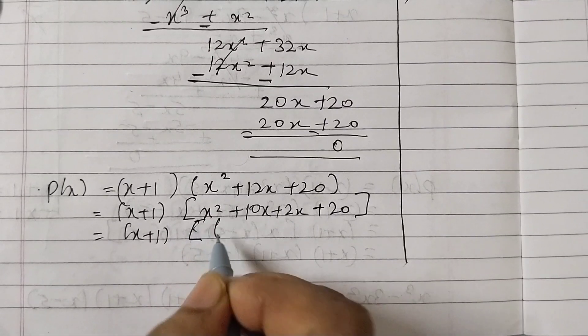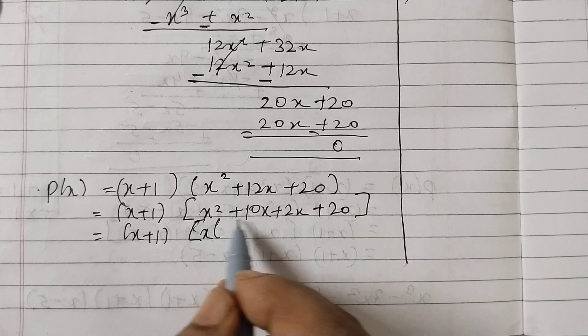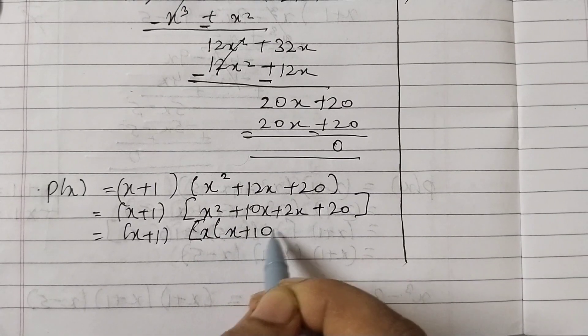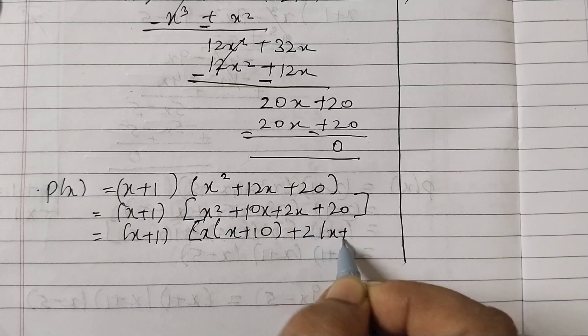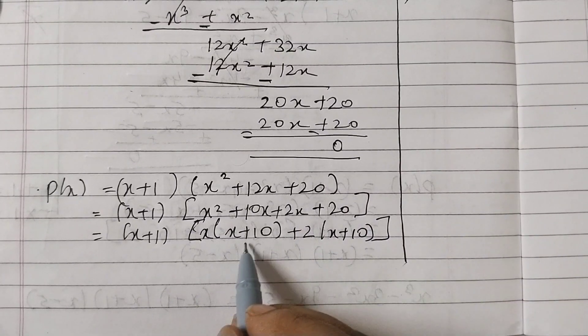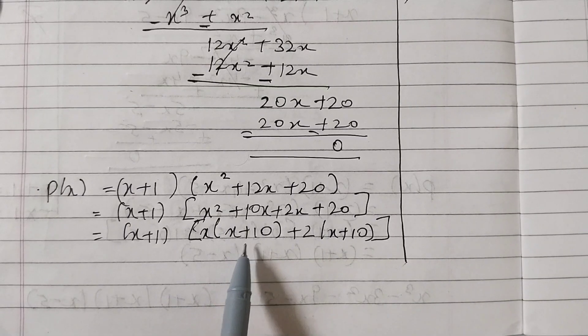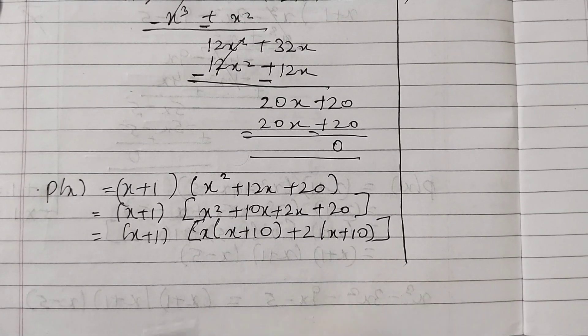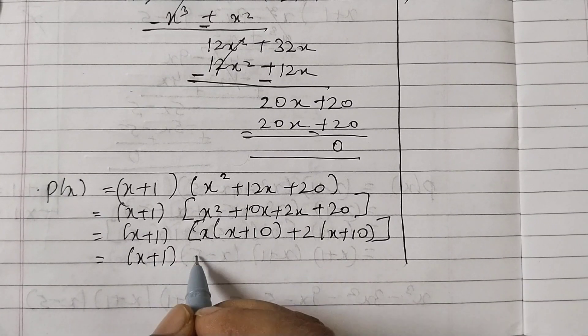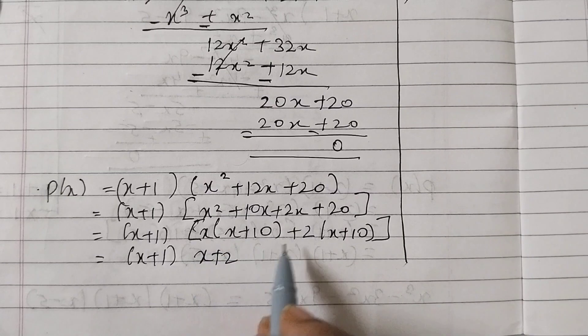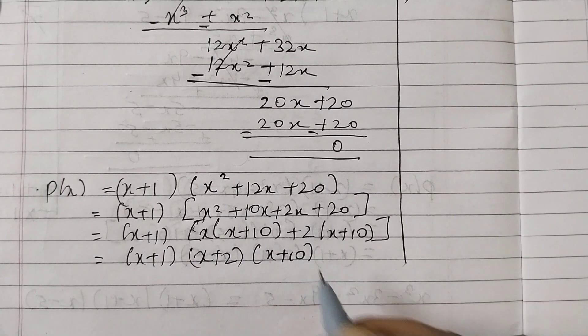First two terms: x(x + 10) + 2(x + 10). Always make sure that this expression remains the same for both terms: x + 10, x + 10. So this equals (x + 1)(x + 2)(x + 10).